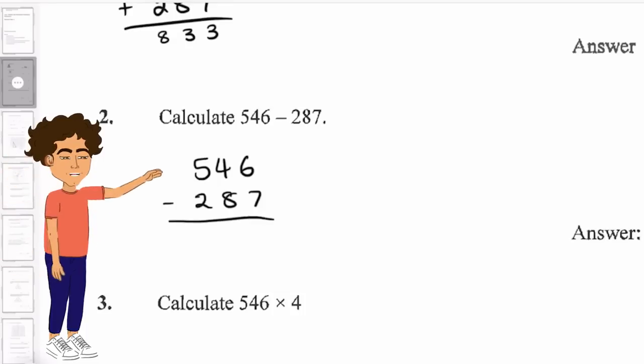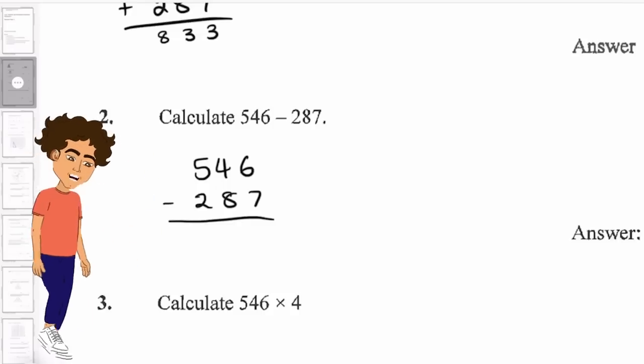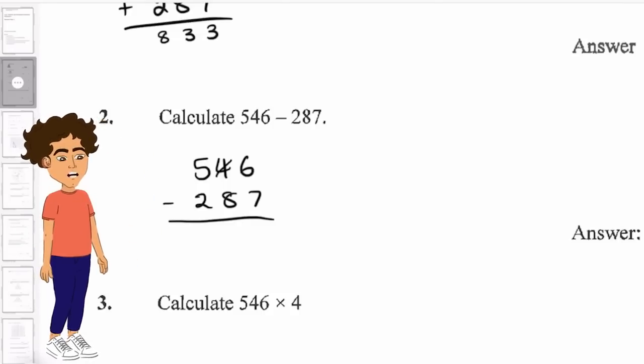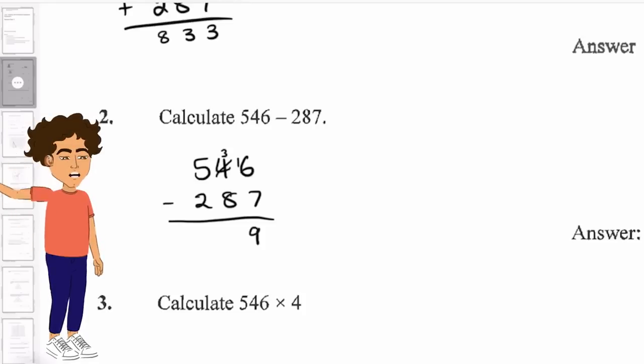In this case, we cannot do 6 take away 7. So we have to borrow from the 4. The 4 we cross out and becomes a 3, and then the 6 becomes a 16. We then have 16 take away 7, which gives us 9.